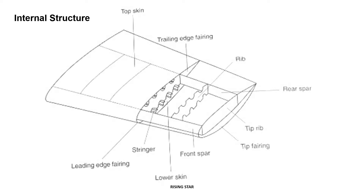Let's look at the internal structure of the wing first. We have top skin and lower skin, and then you can see this is labeled as a leading edge, and then we have the trailing edge of the wing as well.